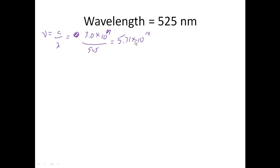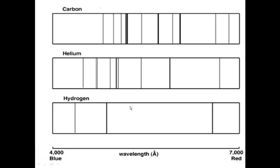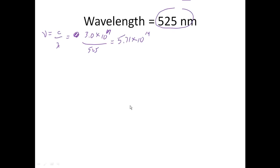So wavelength is 525 nanometers — that tells us without a question that it's in the visible range. 5.71 times 10 to the 14th: here's 10 to the 14th, so we're right in here and it says we're visible. And the number is 525, so that number is going to be right smack dab in the middle of the green range — so we're green.